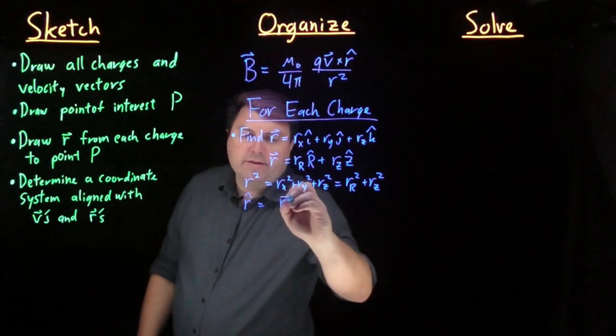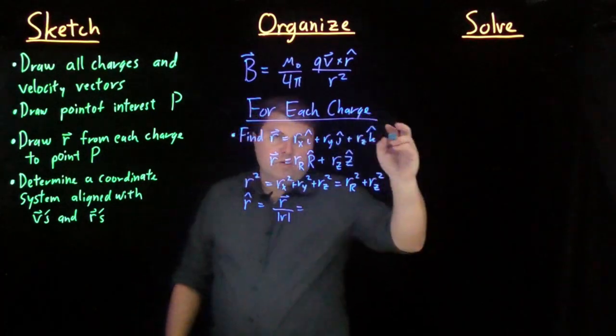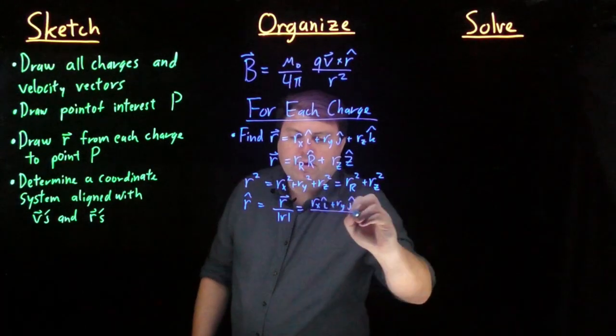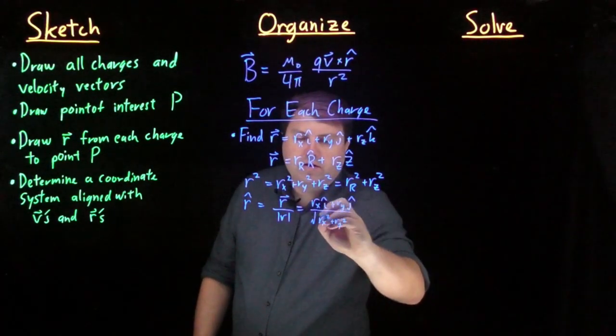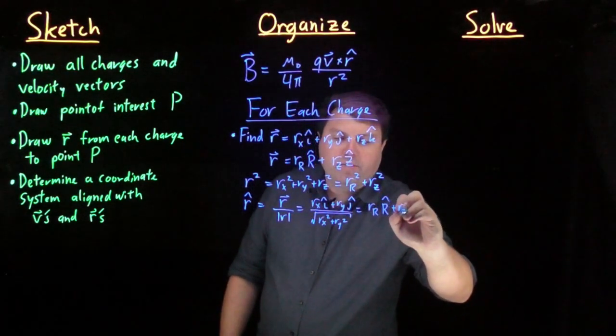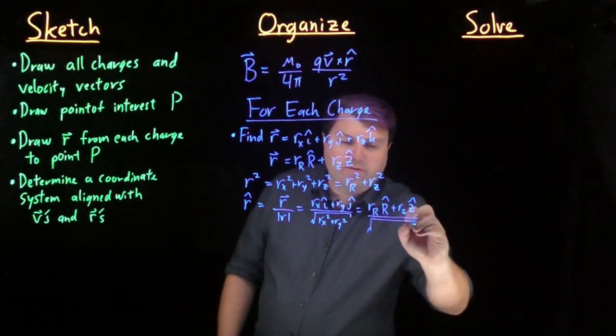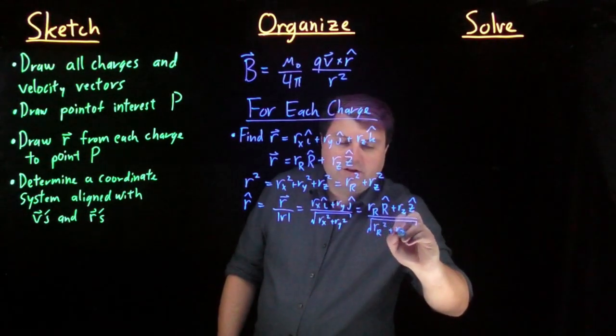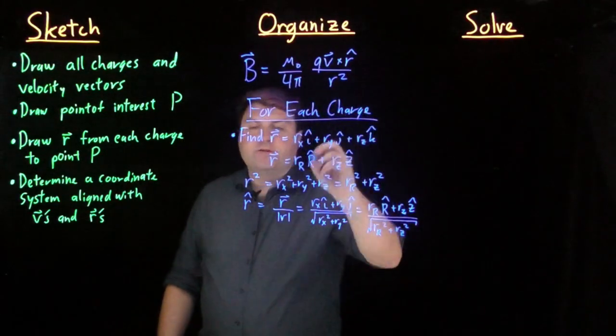And then our r hat is the r vector over the magnitude of r, which can be either of these. So if we have just two-dimensional, it would look something like this, and we could also have r_r r hat plus r_z z hat. Just did this in two dimensions to make it a little bit easier and make sure it fit on the page. If you have three dimensions, obviously have all three. So that's our r hat and our r squared.